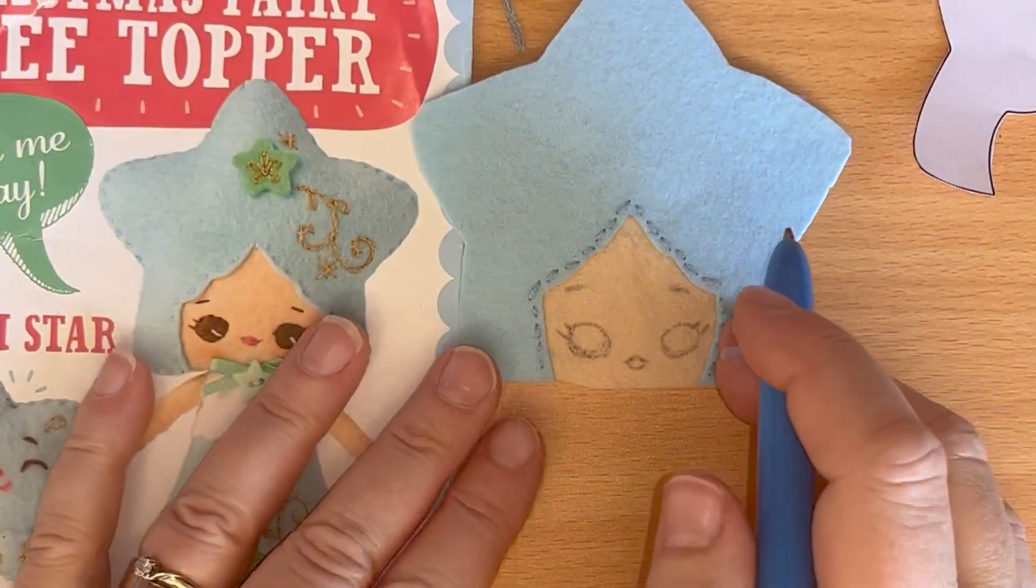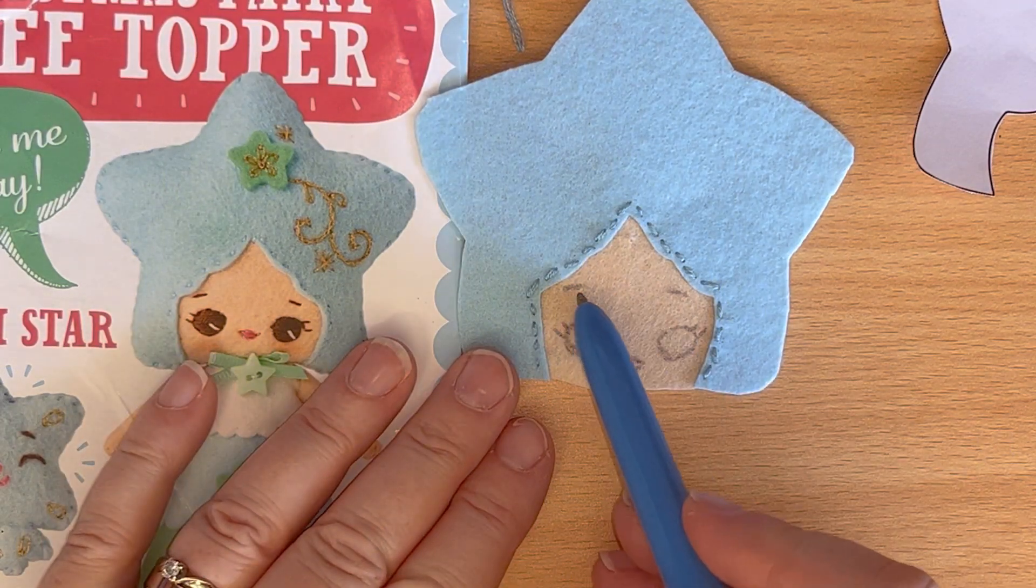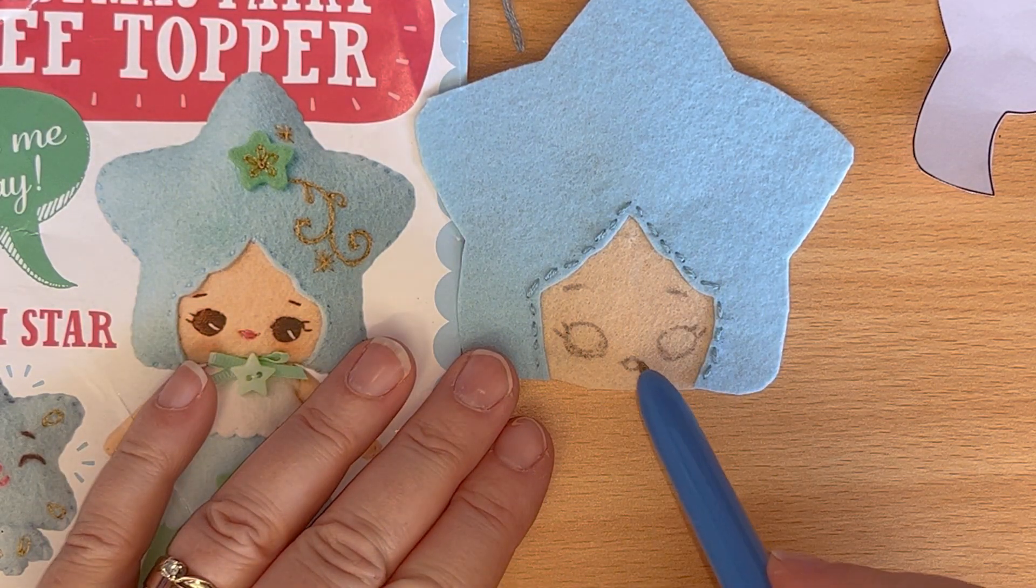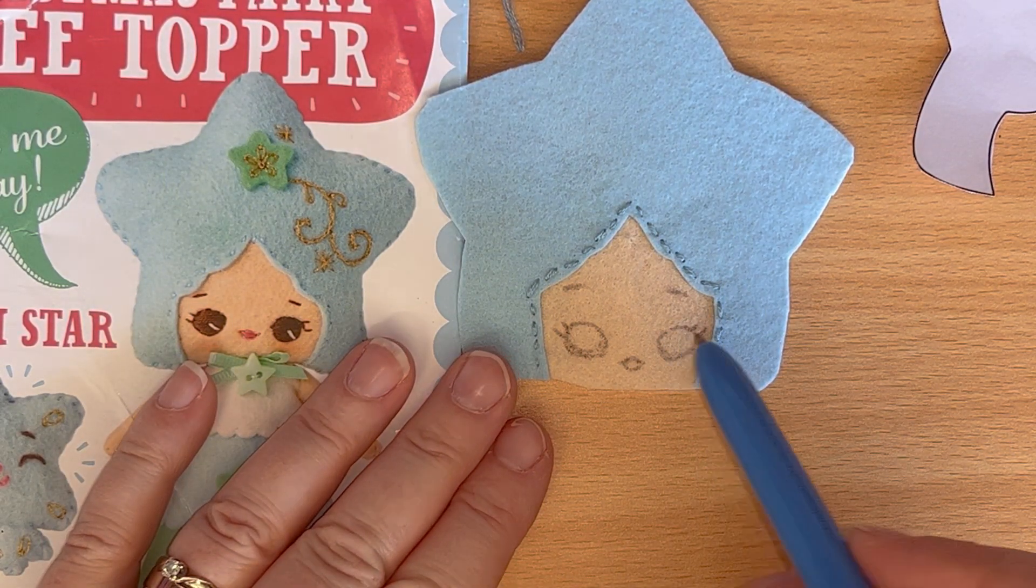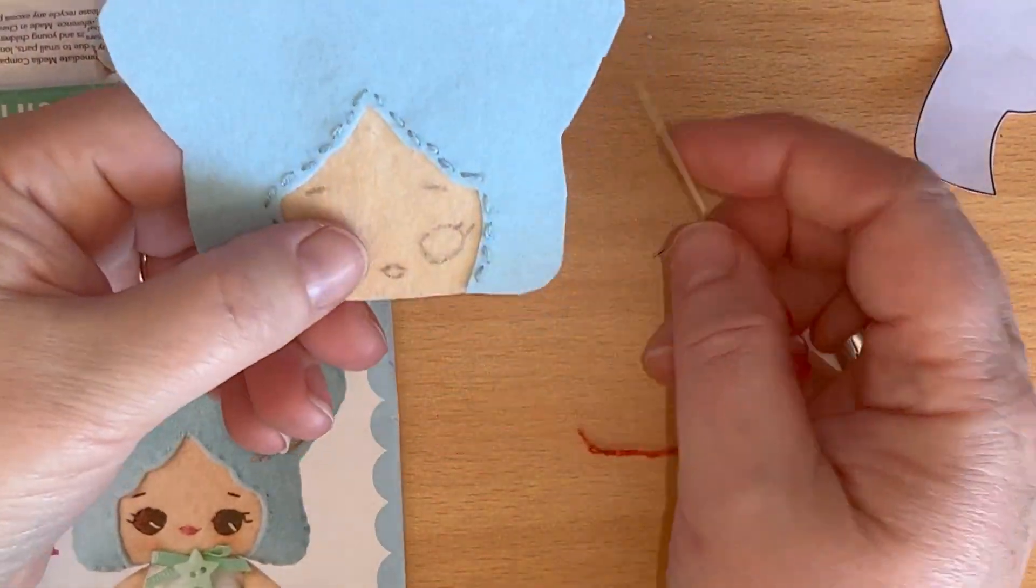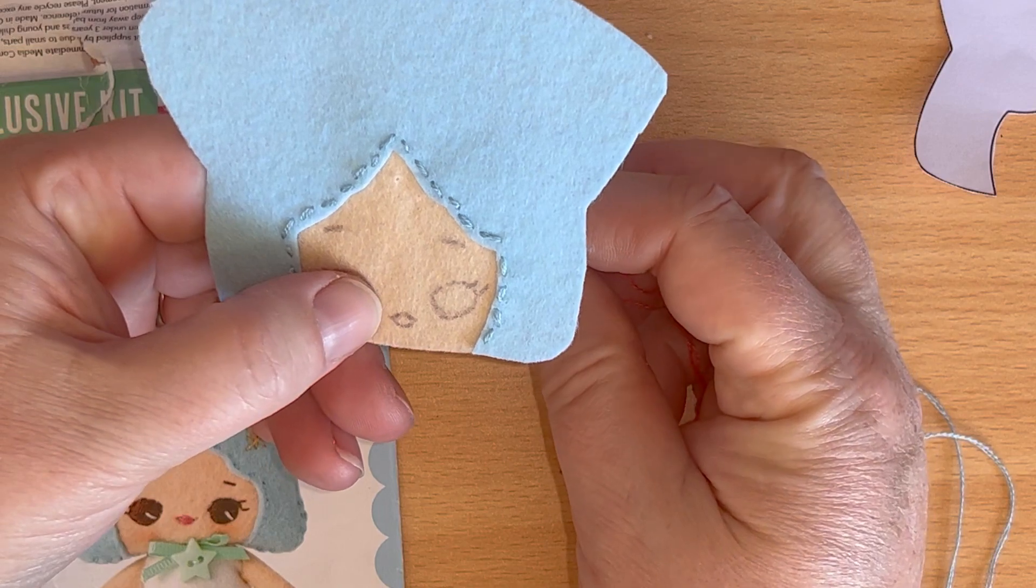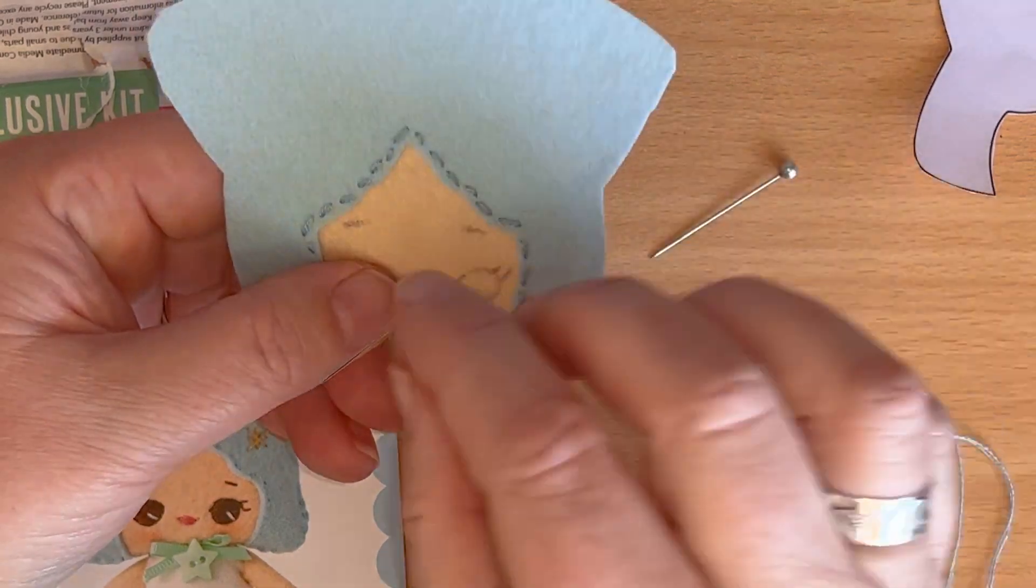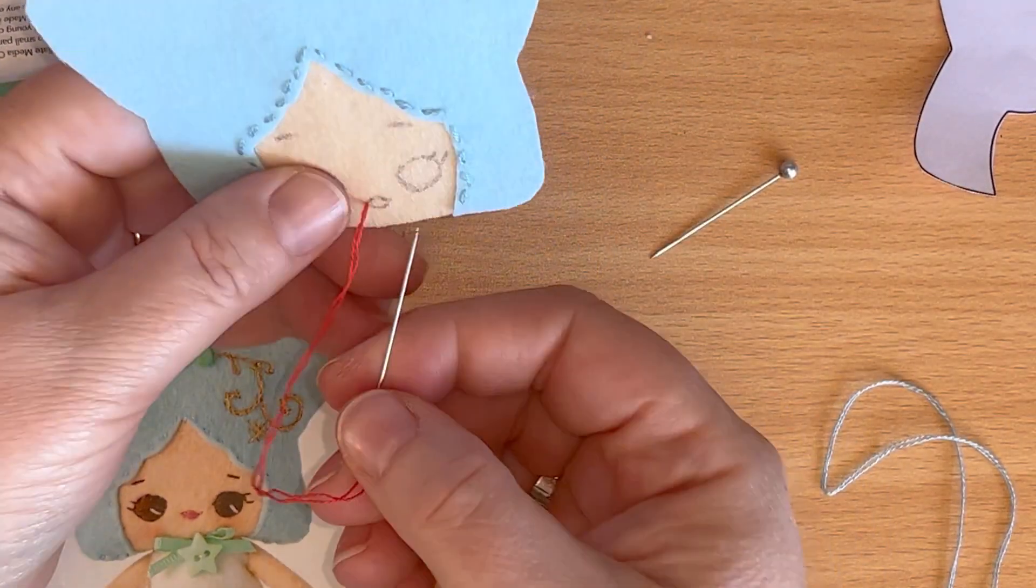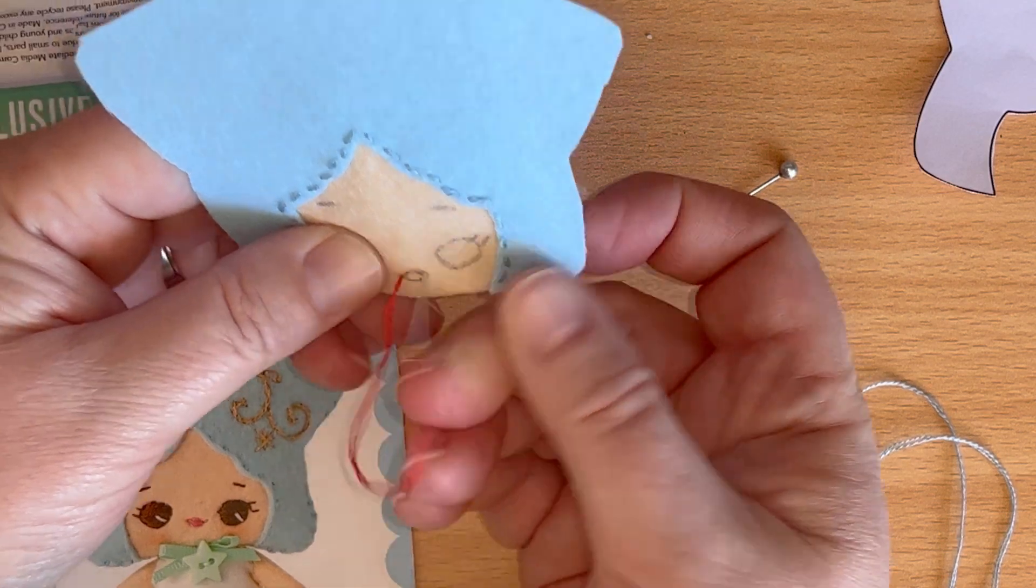Next we're just going to trace the eyes, the eyebrows, and the mouth. I'm just using a regular pen to do this. Then I'm going to start by stitching the mouth in the red thread that is provided.